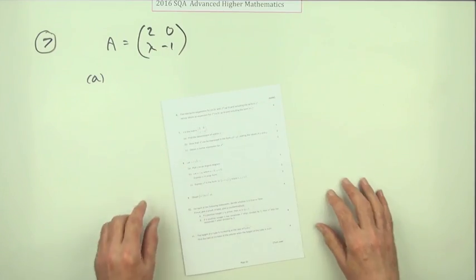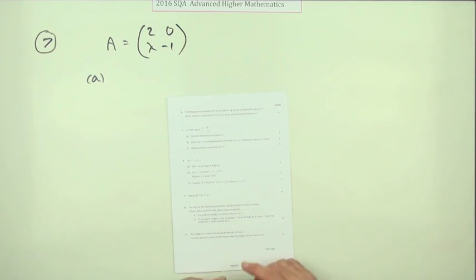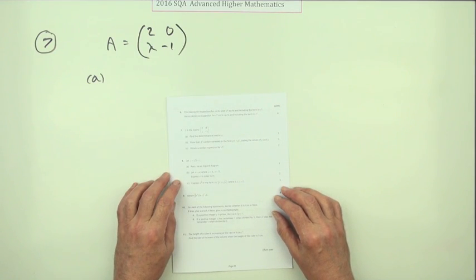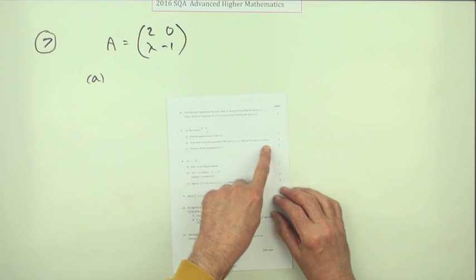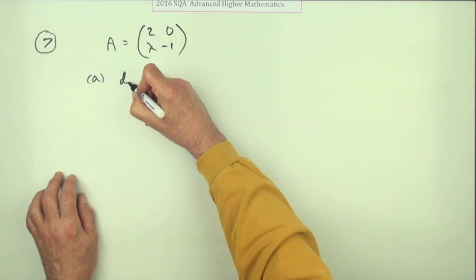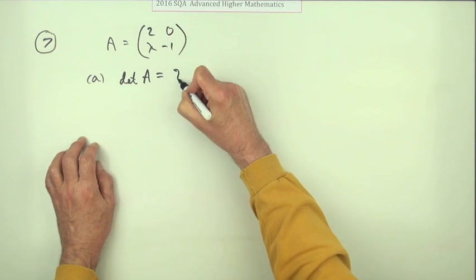Number seven from the 2016 Advanced Higher Maths, a little matrix question for six marks. You're given this little two by two matrix with an unknown entry, and for the first part (a), it just says what's the determinant.